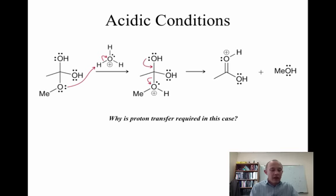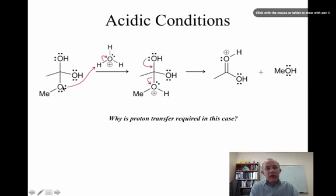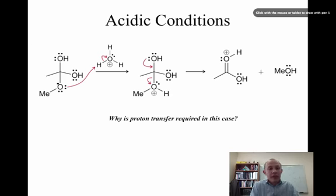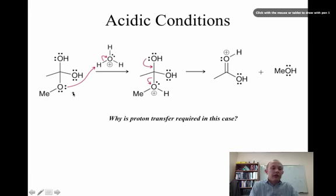The last thing I want to talk about is in the last step, when you have a leaving group leaving, sometimes you need to transfer a proton to it to leave. This is another example from our hydrolysis mechanism of an ester. Sometimes people are tempted to just show the oxygen leaving with a negative charge, but under acidic conditions, methoxide is not a good leaving group. In order to induce this oxygen to leave, we need to transfer a proton to it, which makes it into a much better leaving group — now this thing can leave and it's neutrally charged.